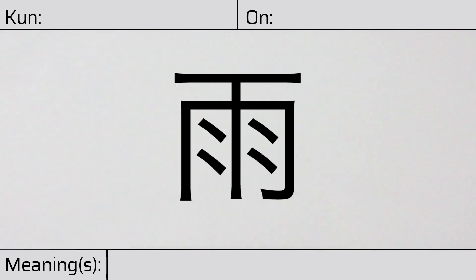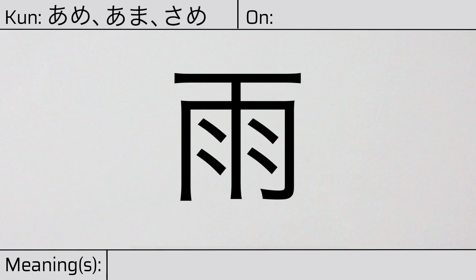Welcome to this lesson on Japanese kanji. Today, we'll be discussing this character. This kanji has kunyomi or Japanese readings of ame, ama, or same, and it has an onyomi or Chinese reading of u. This character has the meaning rain. Here is the stroke order.